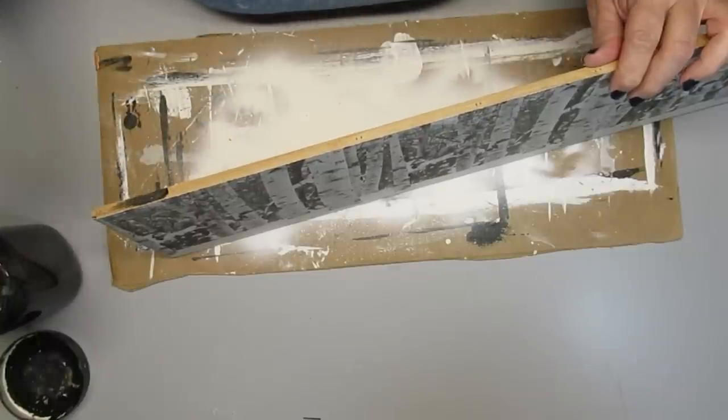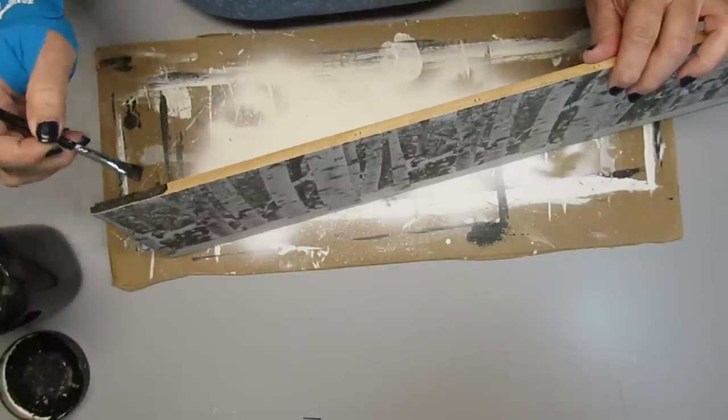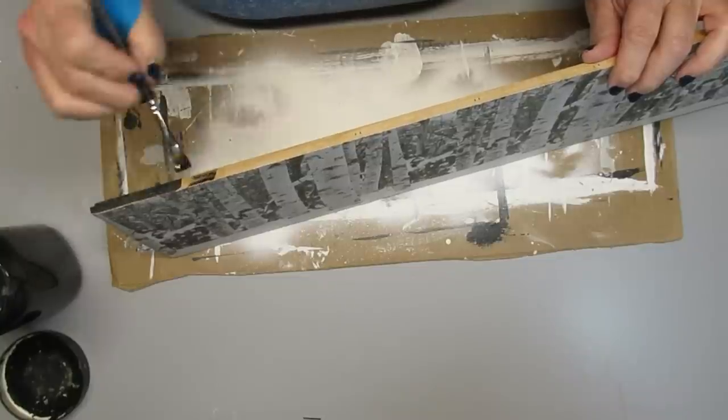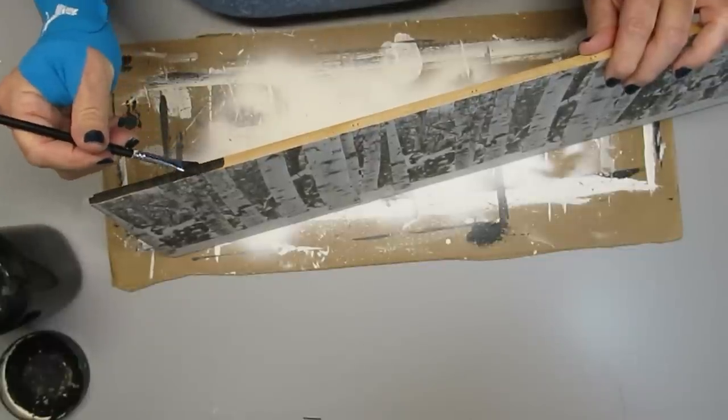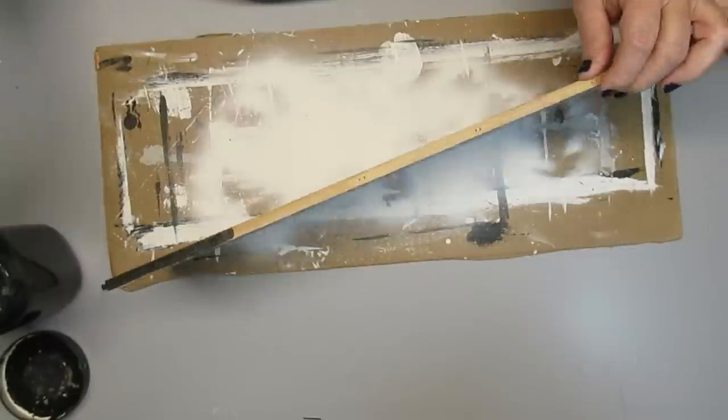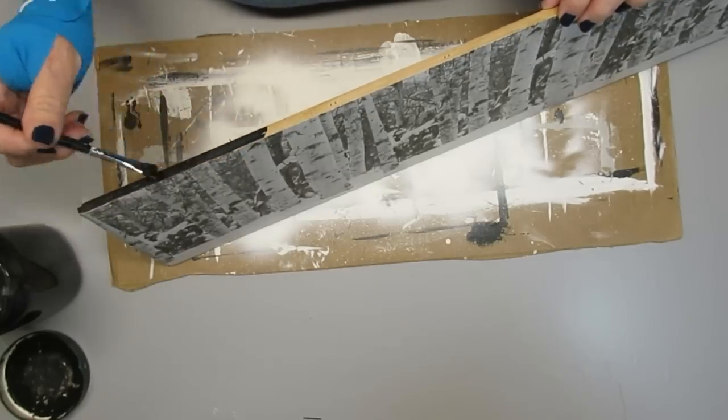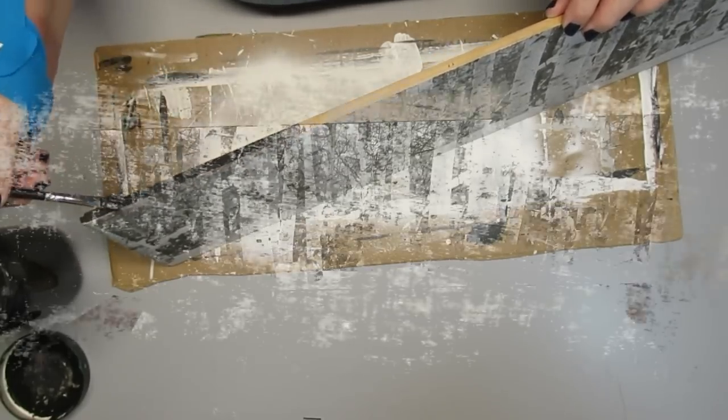I decided to go and take some black paint and just paint all the edges of the wood that are showing with the black. I thought it just matched much better with the grayscale of the print and this project is done and it didn't really even cost me anything.